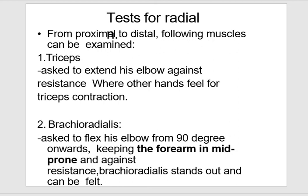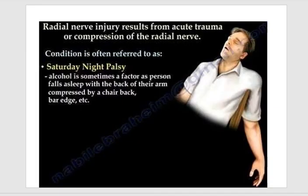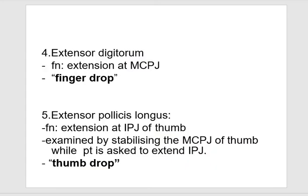Following muscles can be examined: triceps for contraction; brachioradialis — keeping the arm in mid-pronation and adding resistance, brachioradialis stands out and can be felt. Wrist drop indicates paralysis of wrist extensors. Paralysis includes brachioradialis, extensor carpi radialis longus, extensor carpi radialis brevis, extensor digitorum, and extensor carpi ulnaris — also called Saturday night palsy. Finger drop occurs at extension of the MCP joint, and the extensor pollicis longus extends the IPJ of the thumb.